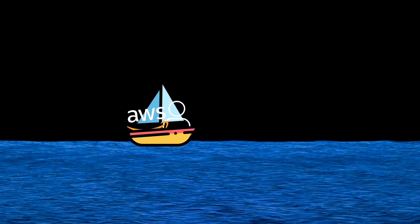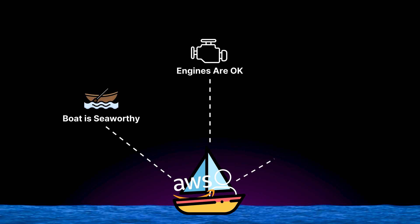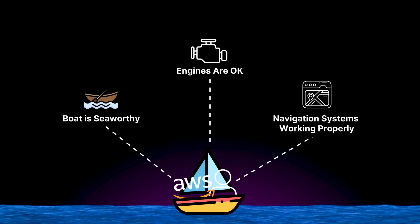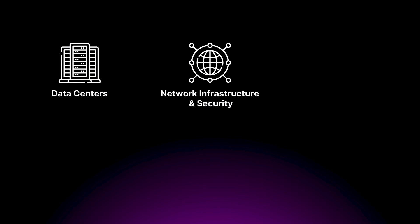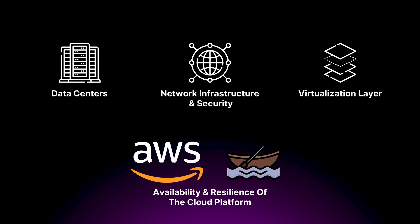Imagine you are in a boat with your cloud provider. You're both responsible for keeping the boat afloat and getting to your destination safely, but you have different roles and responsibilities. Your cloud provider is like the captain of the ship — responsible for the underlying infrastructure, making sure the boat is seaworthy, the engines are running smoothly, and the navigation systems are working properly. In cloud terms, this means they take care of the physical security of data centers, network infrastructure and security, the virtualization layer, and ensuring the availability and resilience of the cloud platform — i.e., your boat.